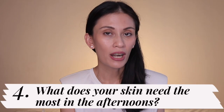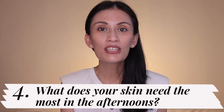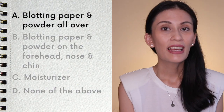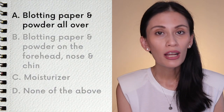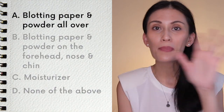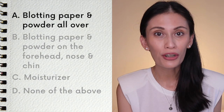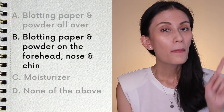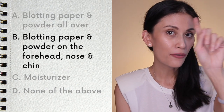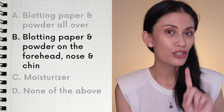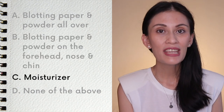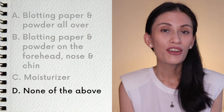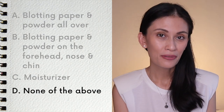Question number four: what does your skin need the most in the afternoons? Letter A, blotting paper and powder all over? Letter B, blotting paper and powder but only on the forehead, nose and chin? Letter C, a moisturizer? And letter D, none of the above?